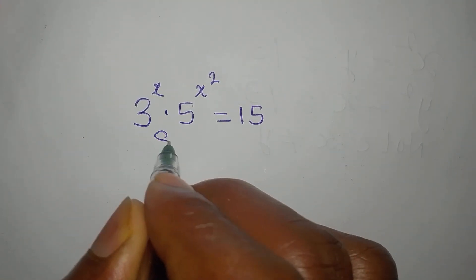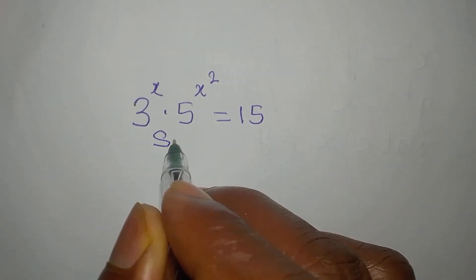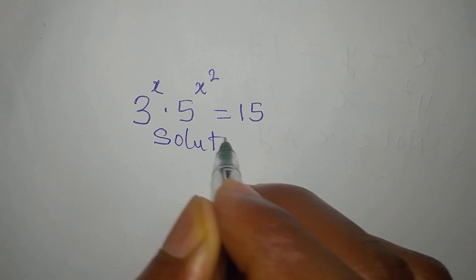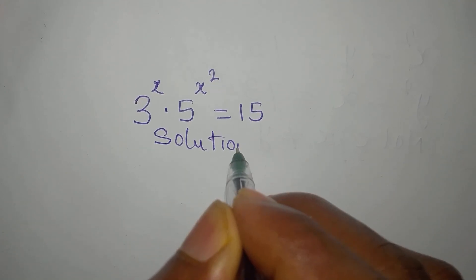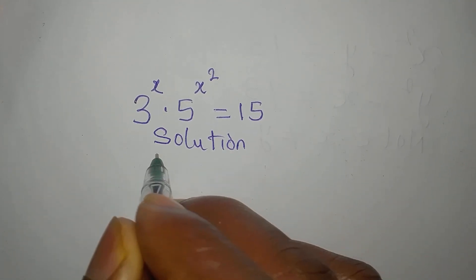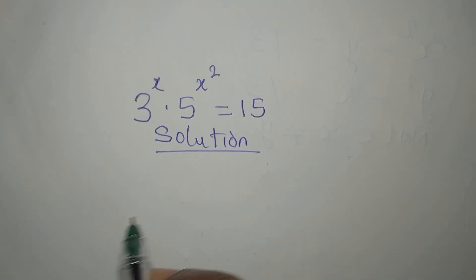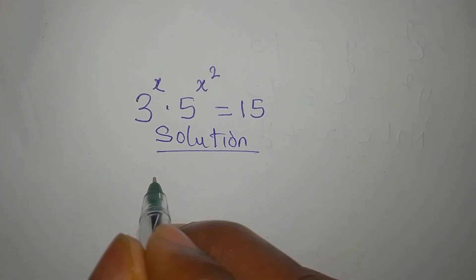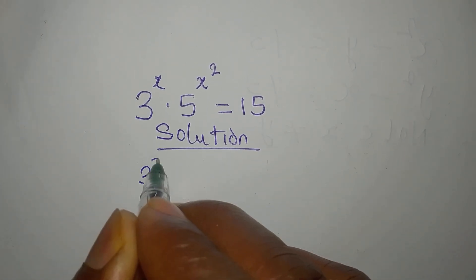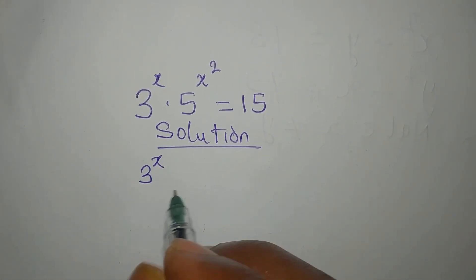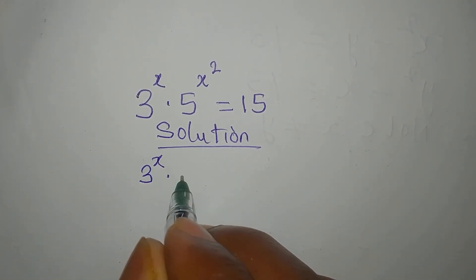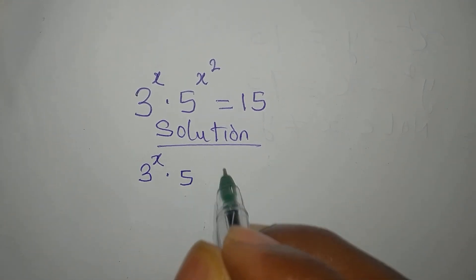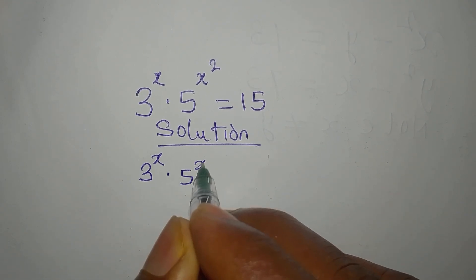Hello everyone. Let's find the solution to this problem: 3 to the power of x times 5 to the power of x squared equals 15.